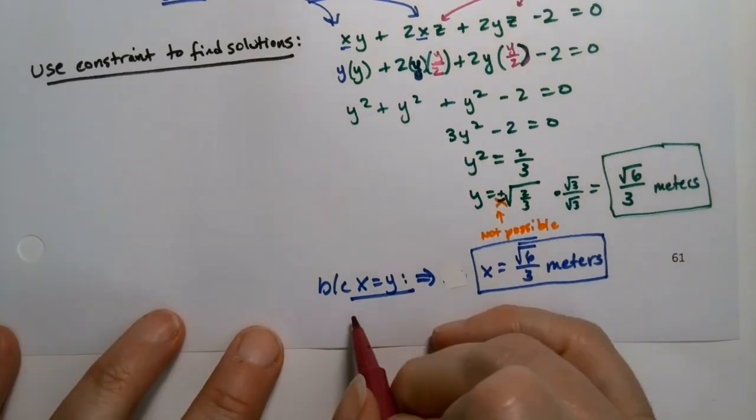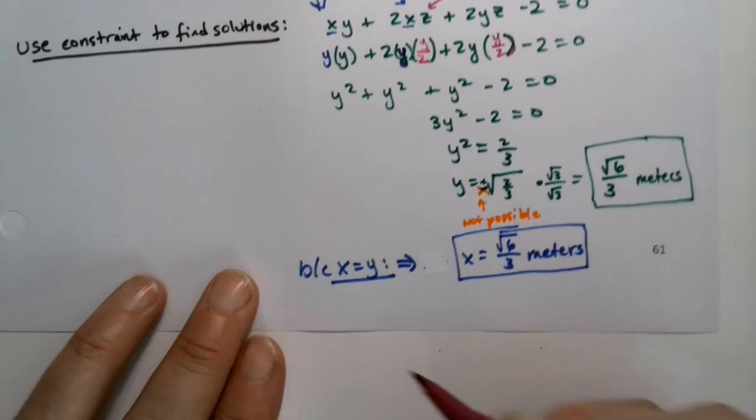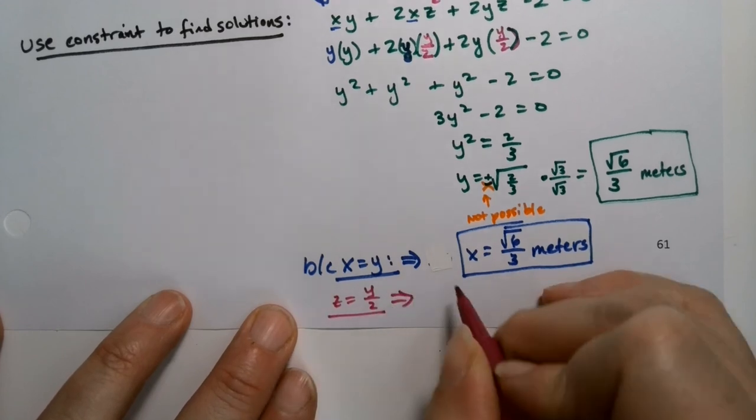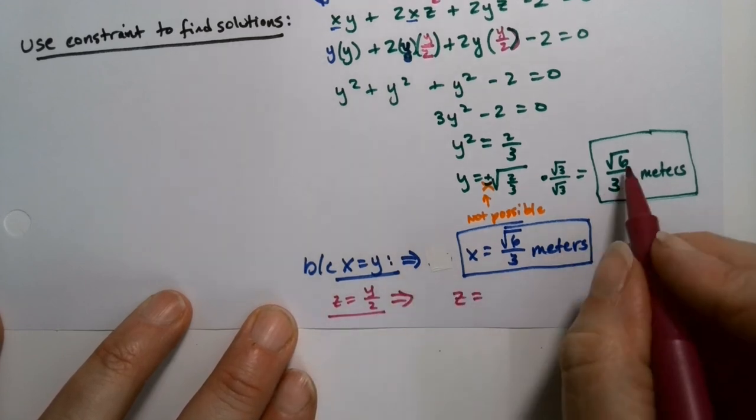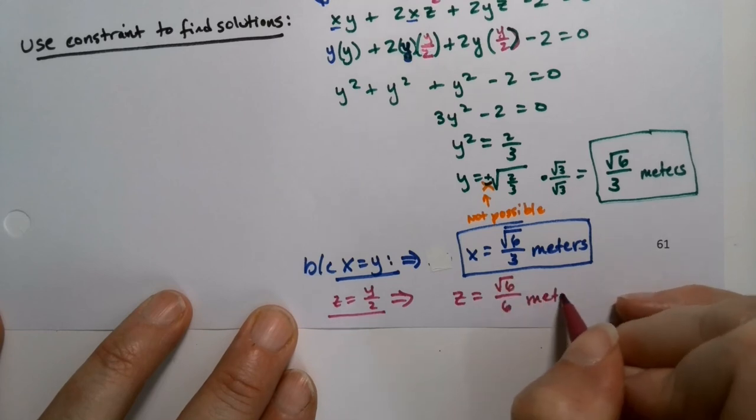And then z, if you remember, y is equal to 2z. So z is equal to y divided by 2. And that means that z is equal to square root of 6 over 6. And we're done.